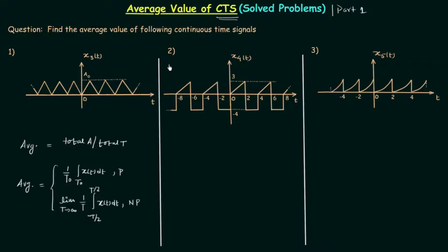I will skip the first problem and move directly to the second problem. The first problem is similar to what we solved in the last lecture. I am naming the signals x3(t), x4(t), and x5(t) because we have already seen x1(t) and x2(t). x1(t) was a periodic signal, x2(t) was non-periodic, and x3(t) is very similar to x1(t), so it is the homework problem for you. Once you have the average value, post your answer in the comment section.